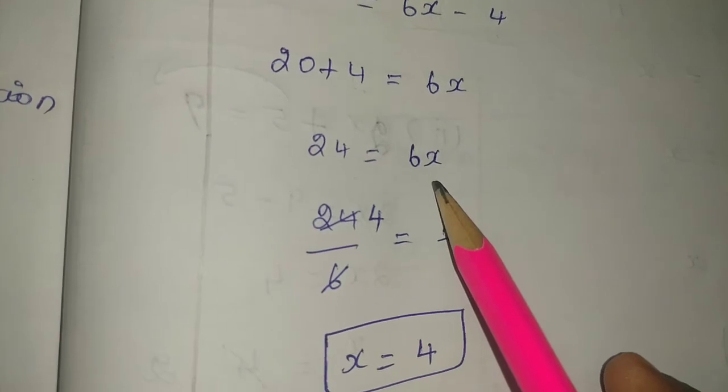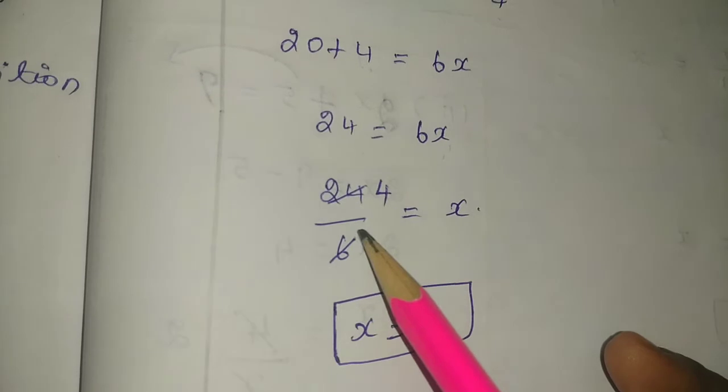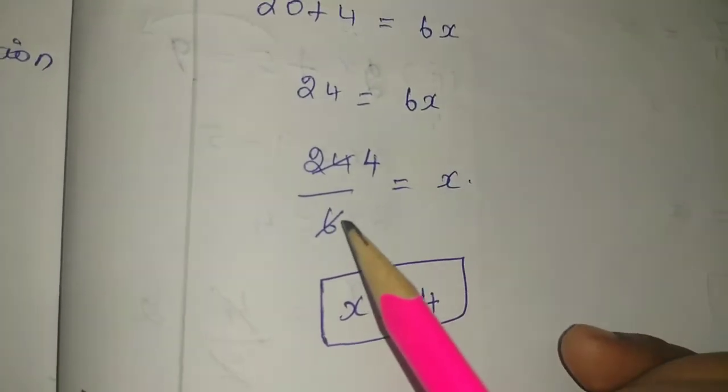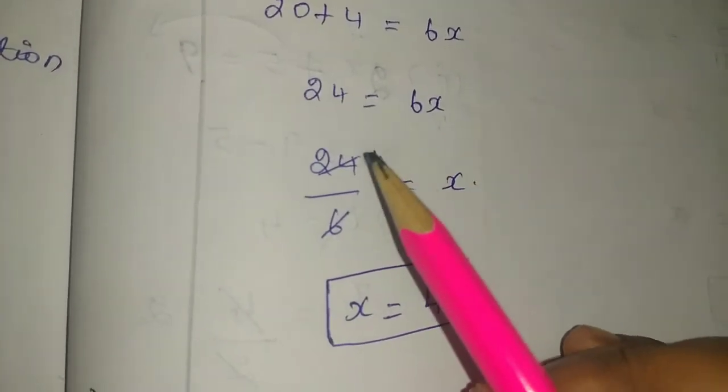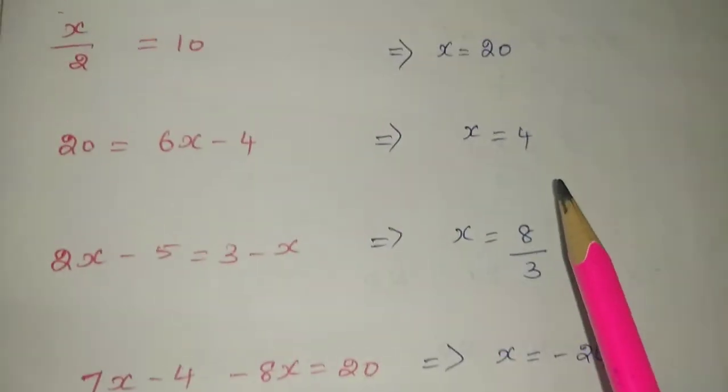If you want to find x, multiplication becomes division through transposition. 6 table is 4 times, so x equals 4. Second answer is 4.